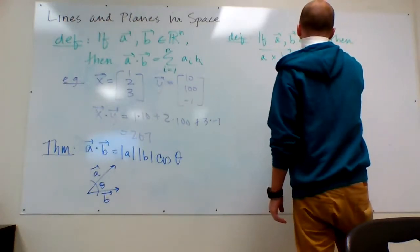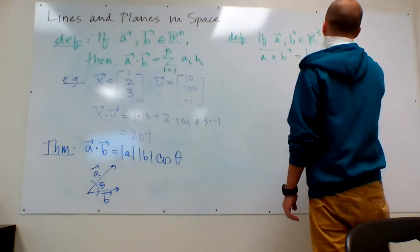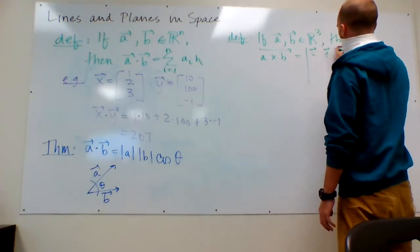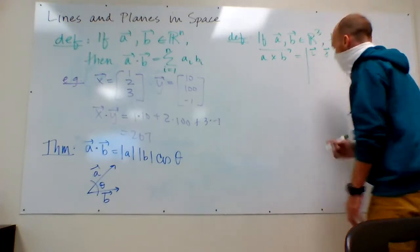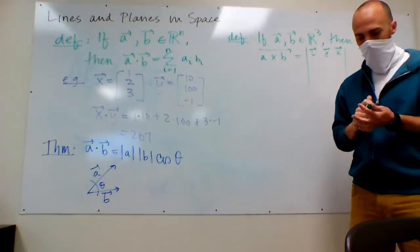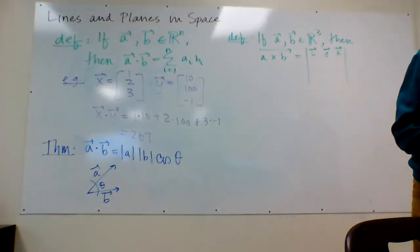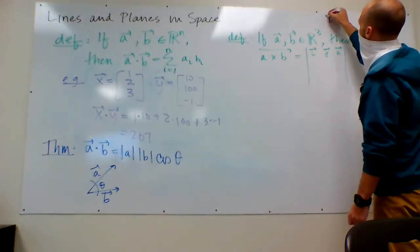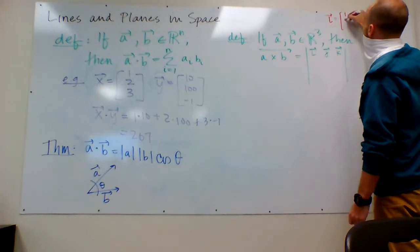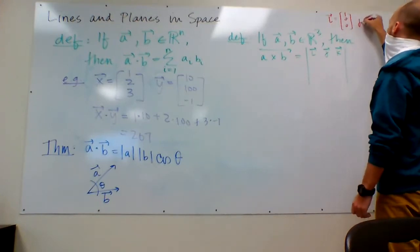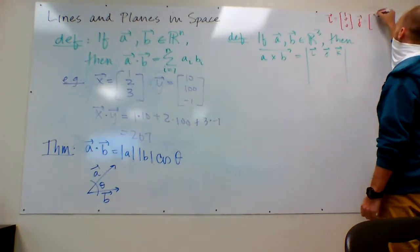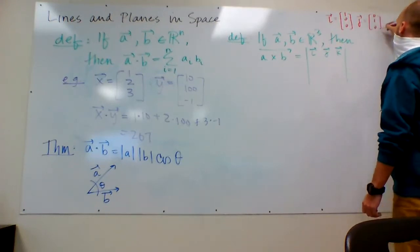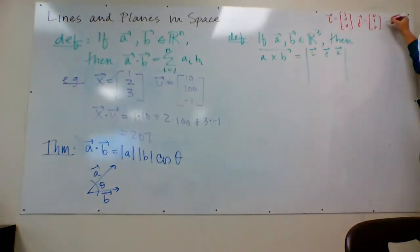So it's equal to the determinant of the matrix that has the unit vector I, the unit vector J, the unit vector K. I'm realizing it's early video in this course. I might need to go over here and remind you what I, J, and K are. I is the unit vector in the X direction. J is the unit vector in the Y direction. And K is the unit vector in the Z direction.